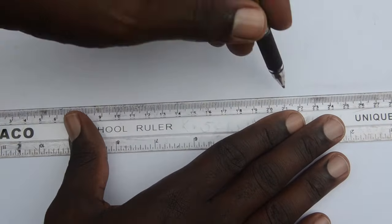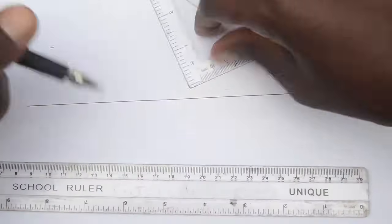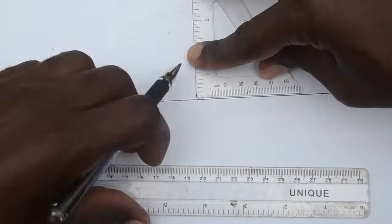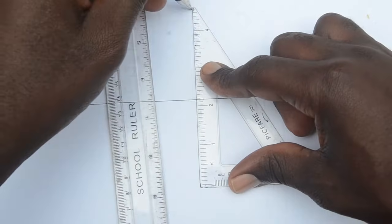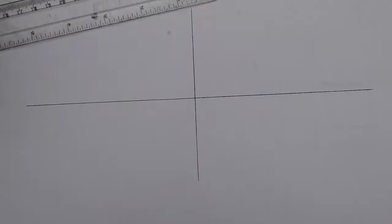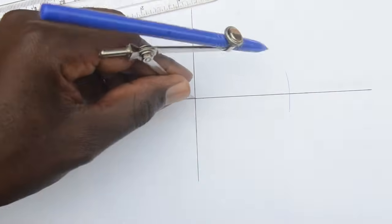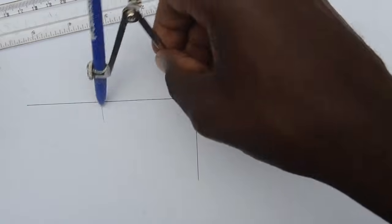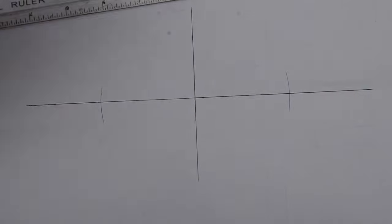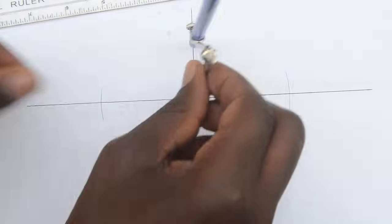Draw a horizontal and vertical axis. Along the horizontal axis, mark off your major axis which is 62.5 millimeters on either side to give you 125 millimeters. On the vertical axis, mark off 35 millimeters up and below to give you the total minor axis of 70 millimeters.